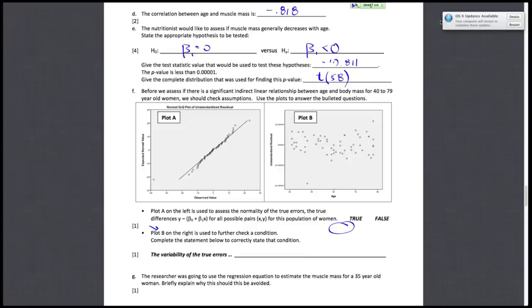Letter F says that before we assess if there is a significant linear relationship, we should check some assumptions. Use the plot to answer the bulleted questions. Plot A on the left is used to assess the normality of the true errors, the true difference is y minus the population equation for all possible pairs x, y for this population of women. And that is true. Notice that what we're given here in plot A is the QQ plot of the unstandardized residual. So what we want to do is see if the population, or the true errors, are normally distributed.